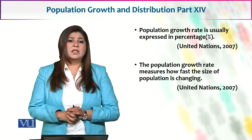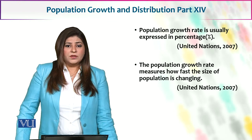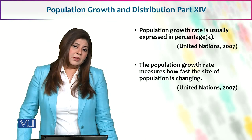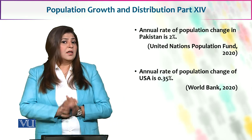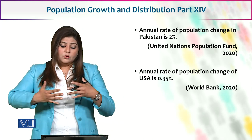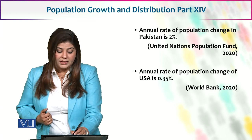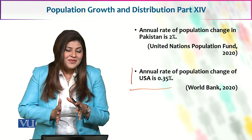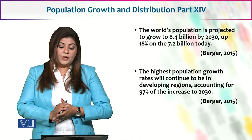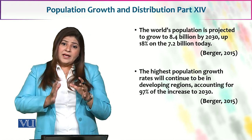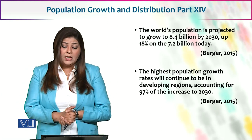Population ke size mein tabdeeli aane ke saath — yeh tabdeeli kisi bhi taraf mein ho sakti hai, population kam bhi ho sakti hai, population zyada bhi ho sakti hai. Annual rate of population change in Pakistan is 2%. Agar hum sirf Pakistan ke perspective mein baat karein to hamara annual rate of population change 2% hai, aur iske neeche bilkul — 0.35% — which is very much less — woh Pakistan ke muqable mein annual rate of population change of USA hai, jo sirf 0.35% hai.